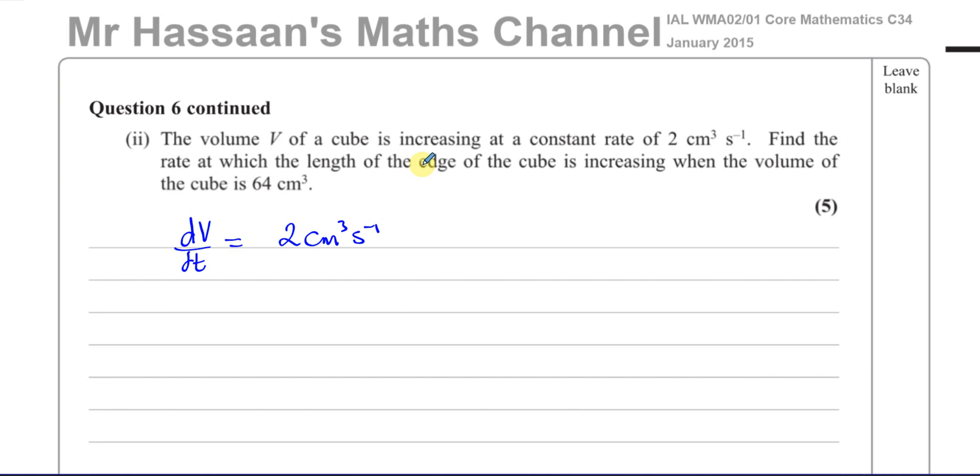And they want us to find the rate at which the length of the edge of the cube is increasing. So they want us to find the rate of change of the length of the cube with respect to time. Let's say the length of the edge of the cube is L. So we'll make a little definition here that the length of the cube edge is L. So we're asked to find dL/dt. This is what we want to find. And we want to find dL/dt when the volume is equal to 64 cm³. So we're asked to find dL/dt, and they gave us dV/dt.